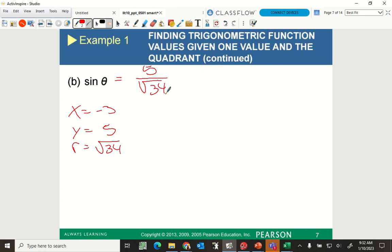All right. So since sine is y over r, my y value here is 5. My r value is rad 34. But wait. There's more. You can't leave it like that. I can't leave it like that, right? I have to rationalize. Rationalize. I need to rationalize this. So I'm going to rationalize by multiplying top and bottom by square root of 34. I'm just going to give me 5 rad 34 over 34. Feeling pretty good? Are we still okay?